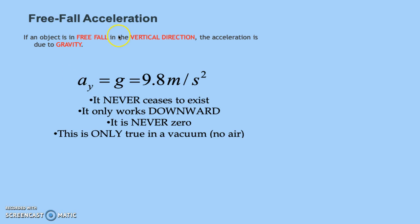Some important things we need to know: this is acceleration from gravity — at this point we've already found it. Gravity always exists, it's always downward, and it's never zero. We always have this downward acceleration from gravity, and sometimes we'll round this to 10 just to make things a little bit easier, but it's always down, it's never zero, it's always there.